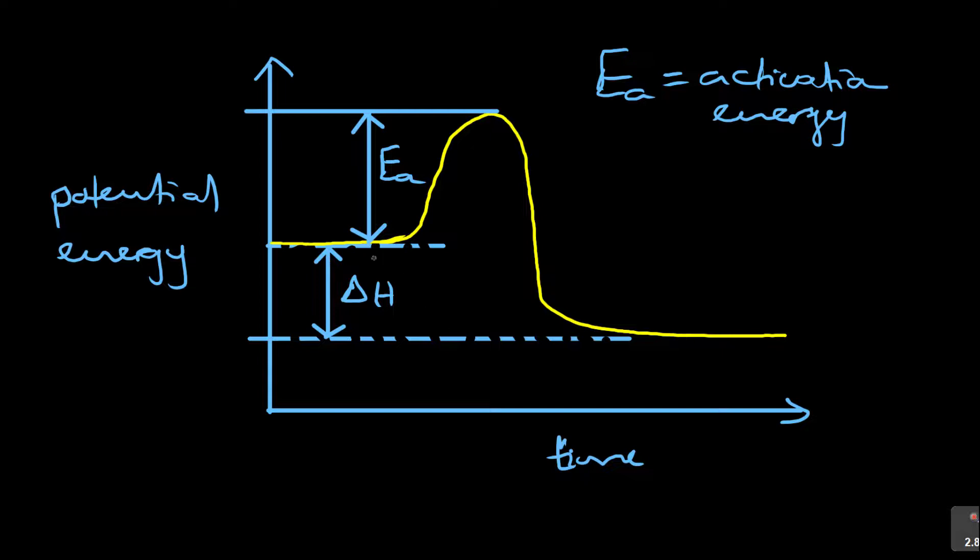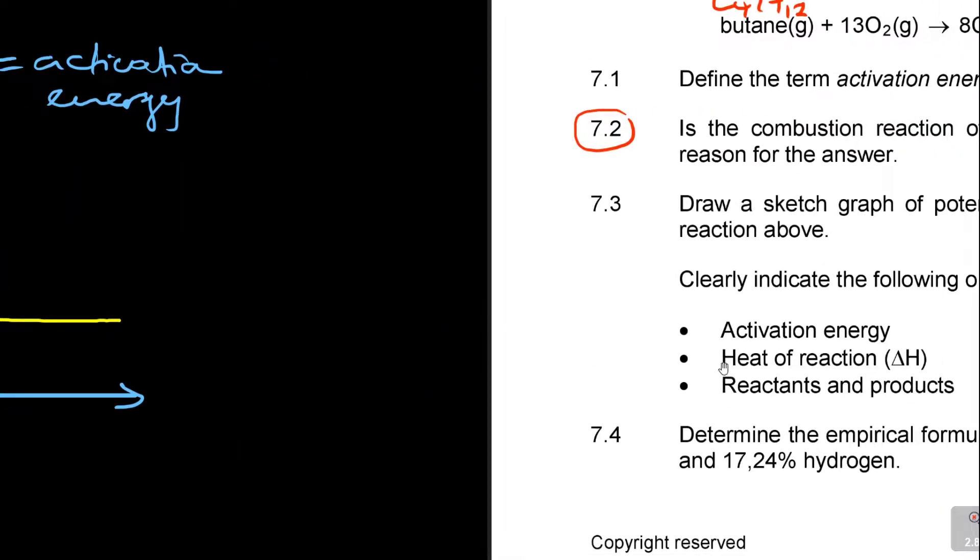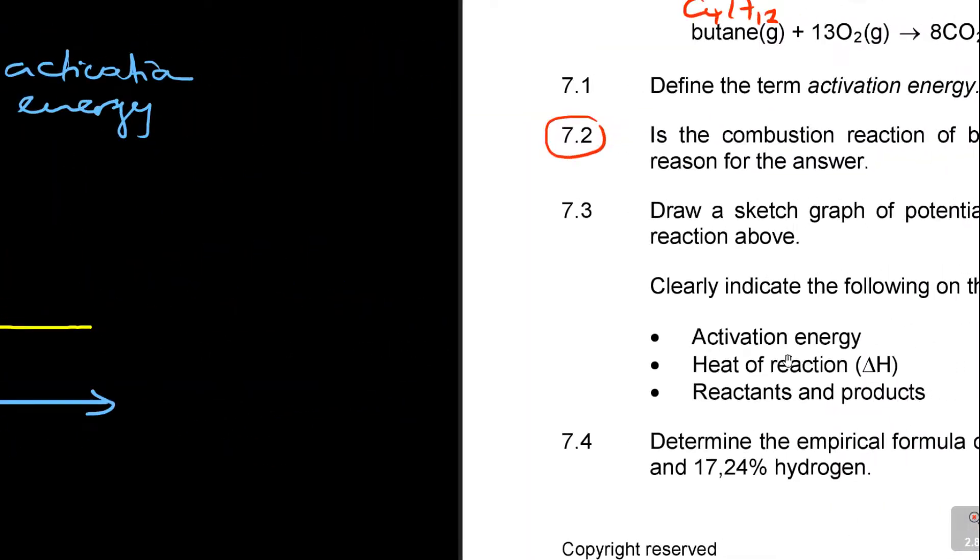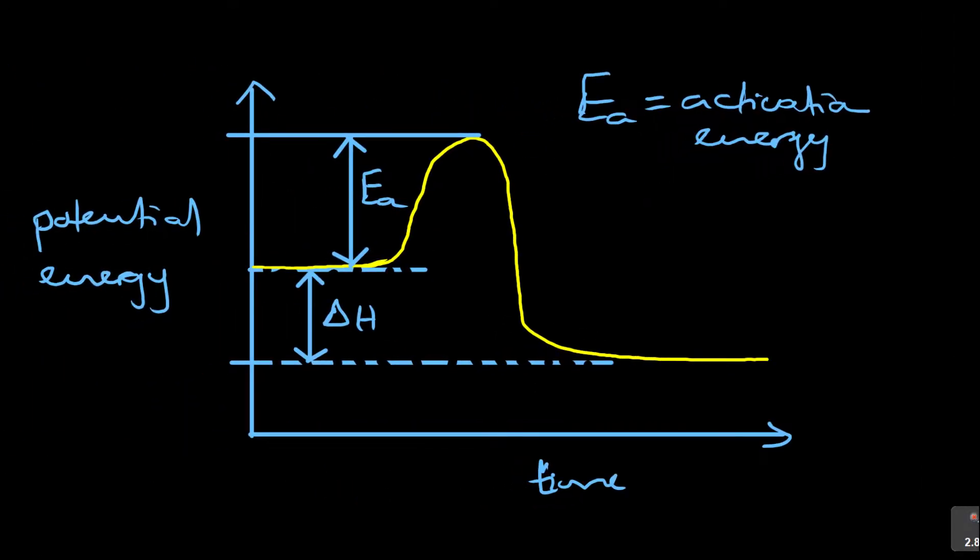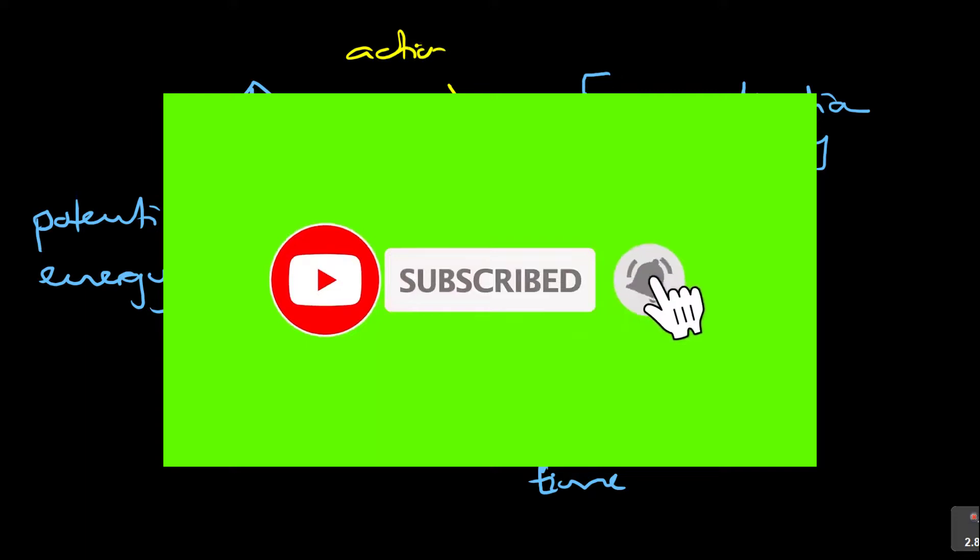And then the reactants, because they told us show us the reactants and products. Delta, the heat of reaction is delta H, we have done it. Activation energy, we have done it. And then reactants and products. So these are the products here. These are the reactants. And then if it was extra, we are going to call this the activated complex, but they didn't ask it. The activated complex. Sometimes they ask for it.